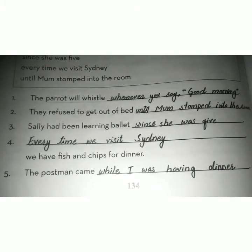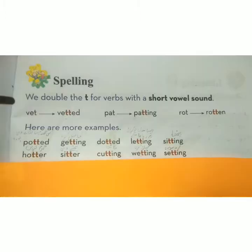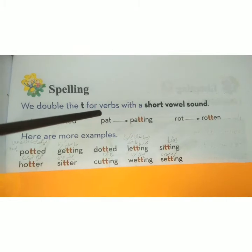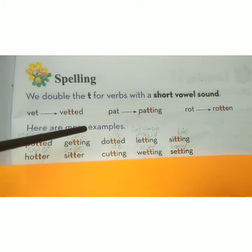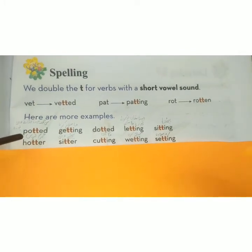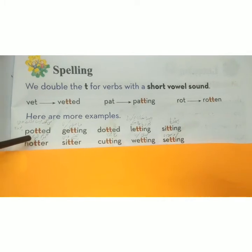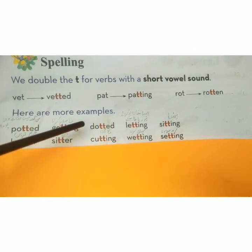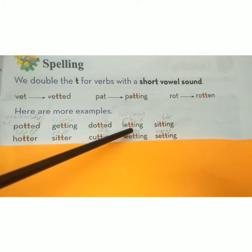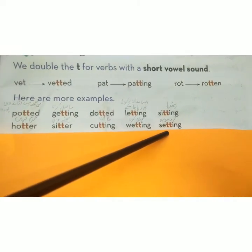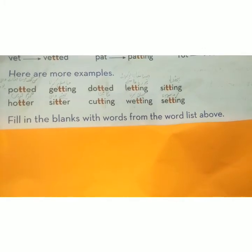Now come to page 135 for the next activity. Spelling: We double the T for verbs with a short vowel sound. Like: wet→wetted, pat→patting, rot→rotten. Here are more examples: potted, getting, dotted lines, letting, sitting, hotter, cutting. Fill in the blanks with the words from the word list.